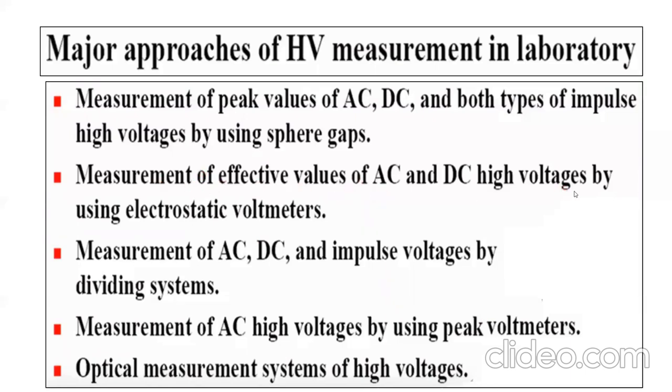Now DC voltage itself is a peak value. The sphere gap arrangement can also be used for measurement of large value of DC voltage and both types of impulses, meaning lightning impulse as well as switching impulse, their peak value.